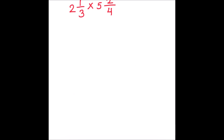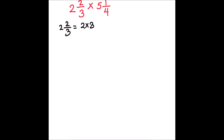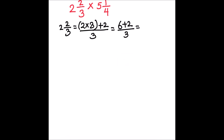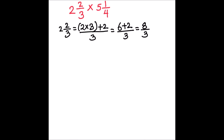Let's see one more example. Our next mixed fractions are two and two thirds times five and one fourth. First of all, we are going to convert these mixed numbers into improper fractions. Two and two thirds will be equal to two times three plus two, divided by three, which equals six plus two divided by three, which equals eight over three.